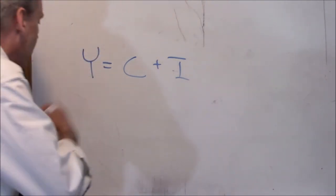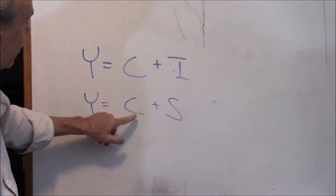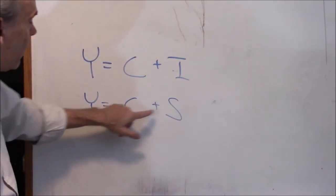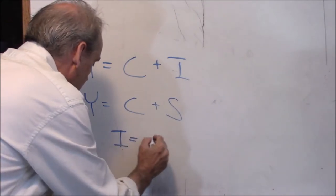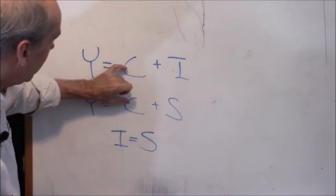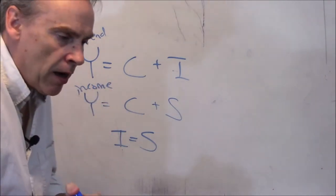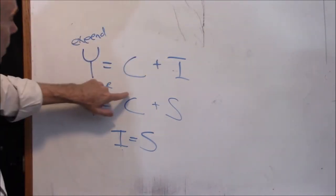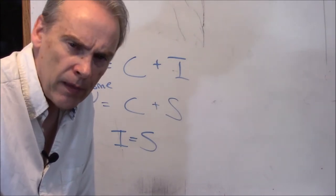Now think about this as income instead of expenditure. There are only two things you can do with income: you can spend it or save it — consumption or savings. Notice there's no taxes because we got rid of the government. So consumption and savings are the only two things you can do. Those of you who are math majors just noticed — as they say in French math classes, Mon Dieu! — it must be true that investment equals savings. Because these two totals are the exact same number.